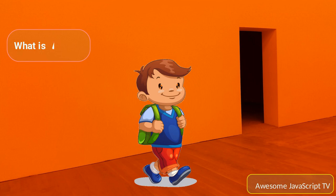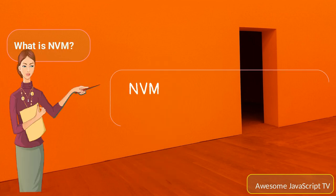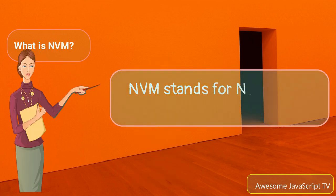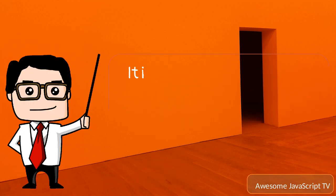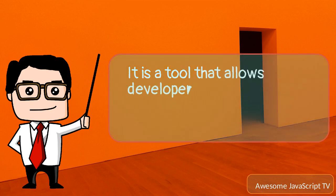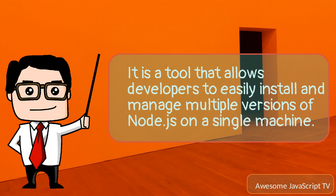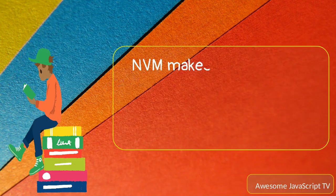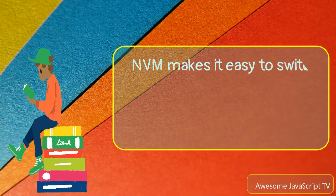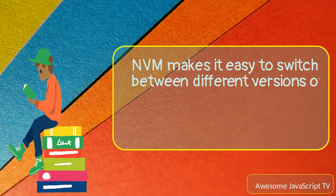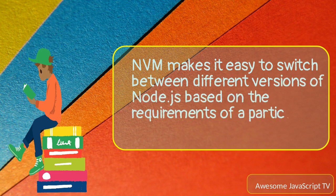What is NVM? NVM stands for Node Version Manager. It is a tool that allows developers to easily install and manage multiple versions of Node.js on a single machine. NVM makes it easy to switch between different versions of Node.js based on the requirements of a particular project.